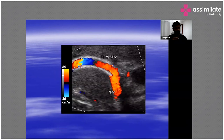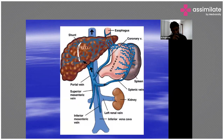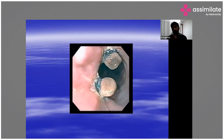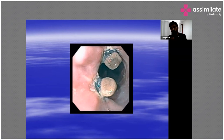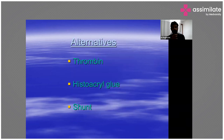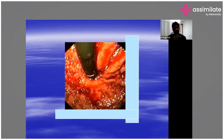This is a Doppler study showing the TIPS procedure stent. When we place bands on the varices, a few days later the tip of the varix and the rubber band fall off, and the engorged vessel gets flattened out. We do serial banding every two weeks until they are fully flattened. Alternatives to band ligation include thrombin, histoacryl or cyanoacrylate glue, or shunt treatment.